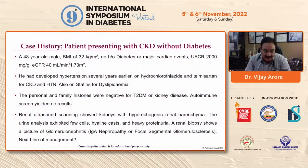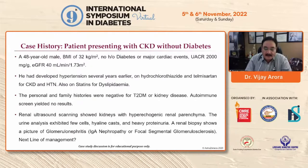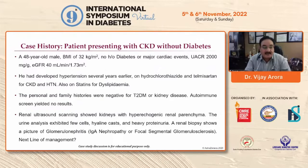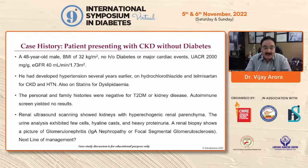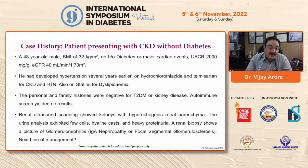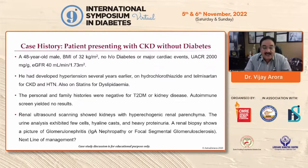For better understanding, consider this case: a 48-year-old male with BMI of 32, no history of diabetes or major cardiac events, having hypertension for several years, on hydrochloroquine for hypertension and a statin for dyslipidemia. His UPCR is 2,000 and eGFR is 40 ml/min/1.73m². Renal ultrasound shows hyperechogenic renal parenchyma. Urinalysis shows RBC casts and heavy proteinuria. Renal biopsy shows a picture consistent with IgA nephropathy or focal segmental glomerulosclerosis. What should be the next line of management?